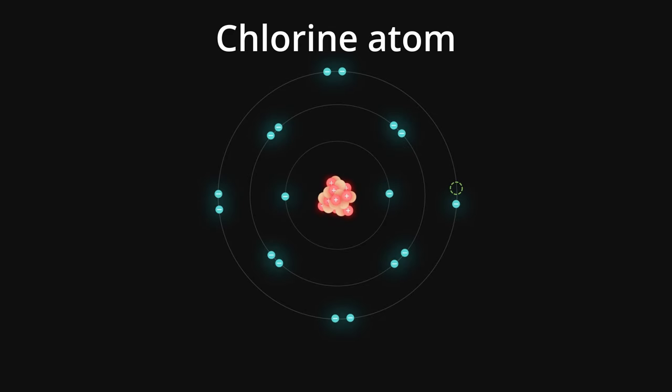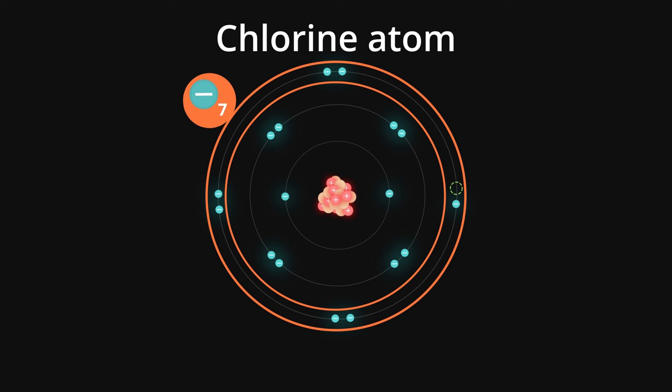Here is a chlorine atom. It starts out with seven electrons in its outer shell. If it could only get one more, it would reach that magical number of stability. It wants an extra electron so much that it can pull it away from almost any other substance. That is why chlorine is so reactive.